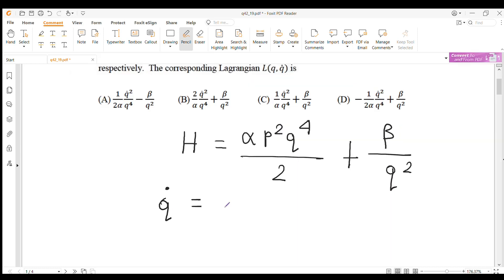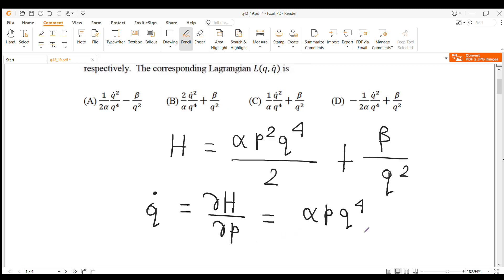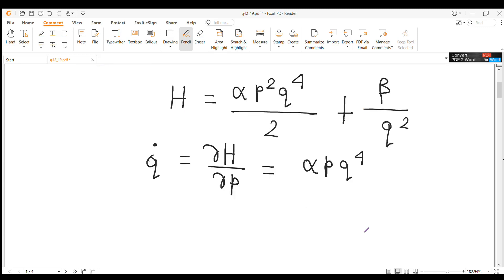From the Hamiltonian's equation of motion we have q dot equals del H del p, so q dot is equal to alpha p q to the power 4. So p can be written as q dot by alpha q to the power 4.